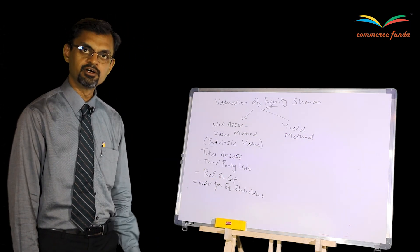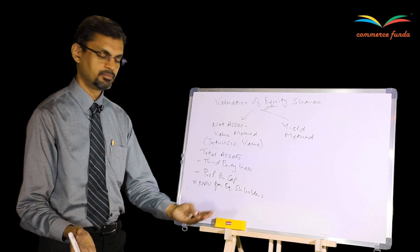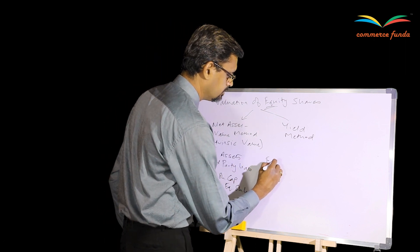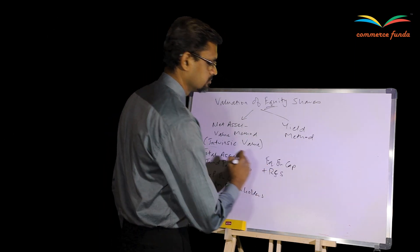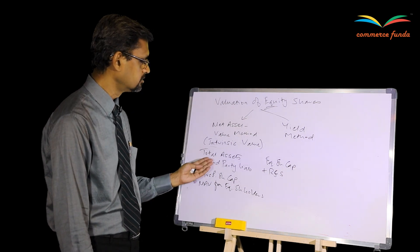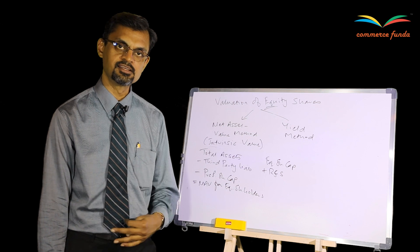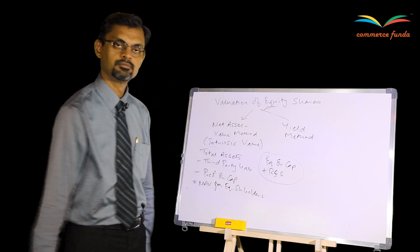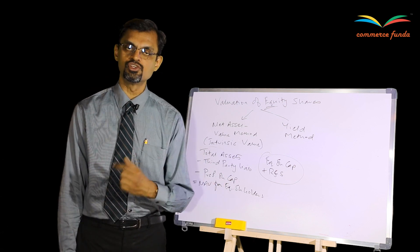There is another way to calculate the net asset value belonging to equity shareholders. Since the balance sheet always tallies on both sides, you can calculate it either way. The alternative is: equity share capital plus reserves and surplus. Third-party liabilities will include non-current liabilities as well as current liabilities. Either way you will get the same answer — that is your net asset value belonging to the equity shareholders, and that number divided by the number of equity shares is your value of equity share as per the intrinsic value method.